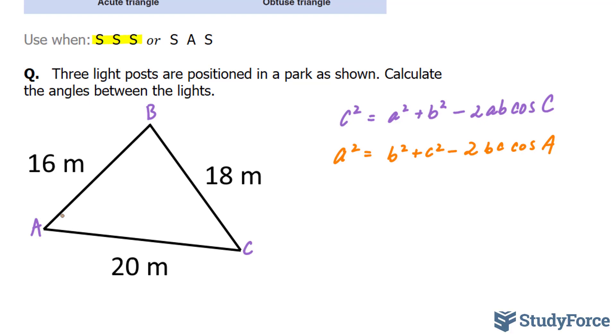It doesn't really matter. We'll start off by using either or. Let's pick the purple one. So my a, my little a, is 18, my little b is 20, and my little c is 16. This, this, and this. Filling this out, you should end up with this equation.